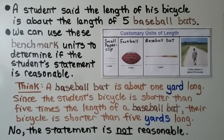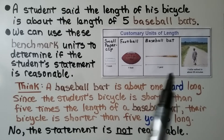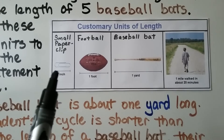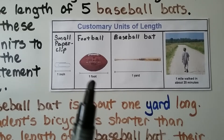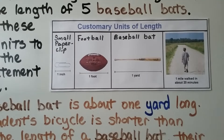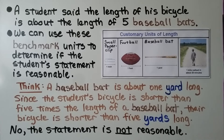A student said the length of his bicycle is about the length of five baseball bats. We can use benchmark units to determine if the student's statement is reasonable. A small paper clip is about an inch long, a football is about one foot long, a baseball bat is a yard long, and one mile can be walked in about 20 minutes — those are customary units of length. A baseball bat is about one yard long, and since the student's bicycle is shorter than five times the length of a baseball bat, their bicycle is shorter than five yards long. So, no, the statement is not reasonable.